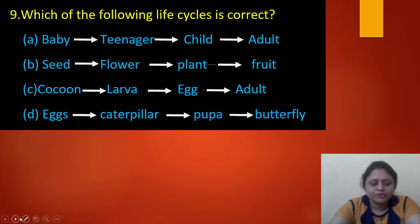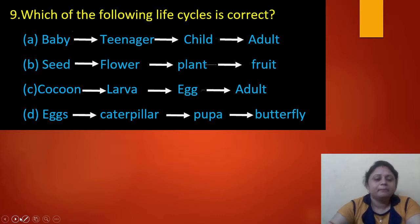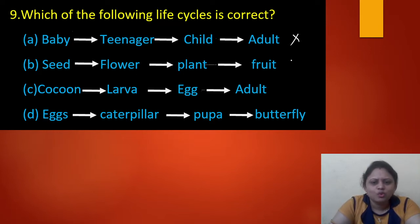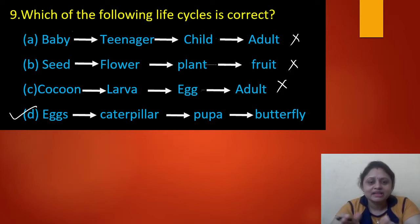Next question: which of the following life cycles is correct? Option A: baby, teenager, child, adult. Option B: seed, flower, plant, fruit. Option C: cocoon, larva, egg, adult. Option D: egg, caterpillar, pupa, butterfly. Option A is not correct, option B is not correct, option C is not correct. The correct life cycle is option D — egg, then caterpillar, then pupa, then butterfly.